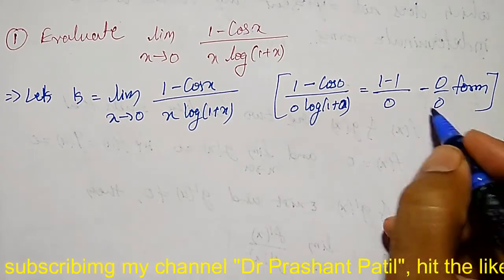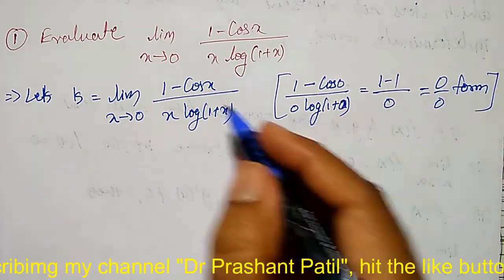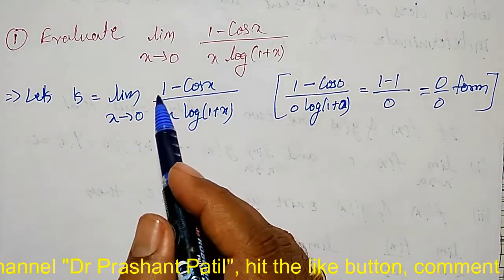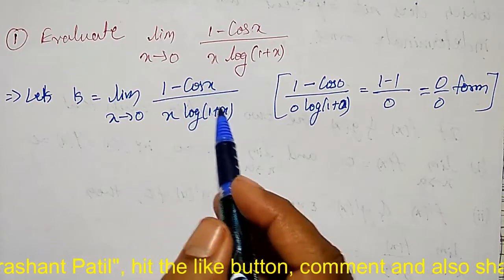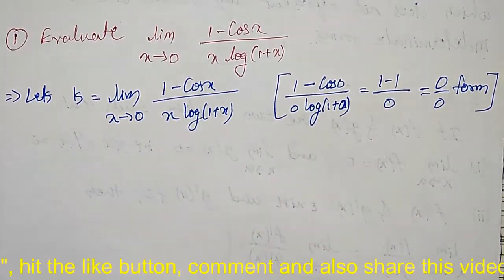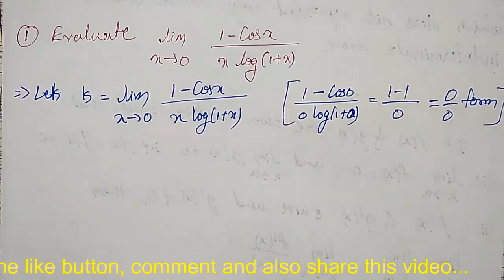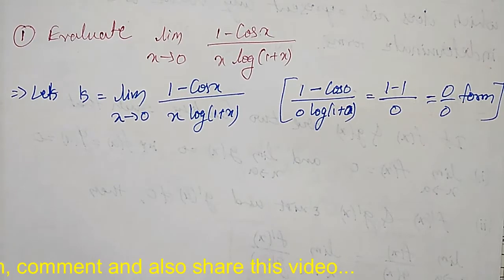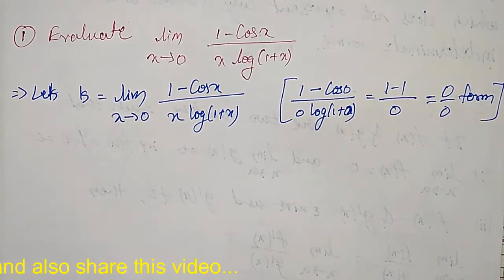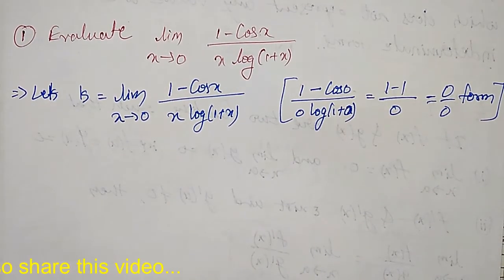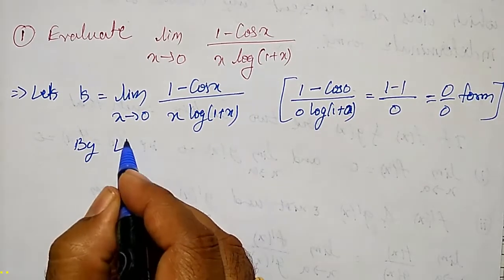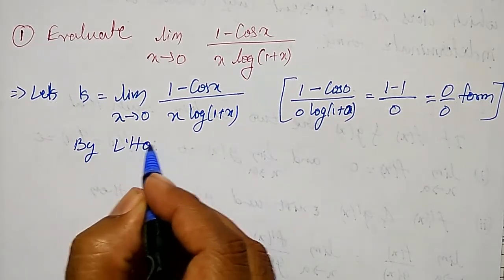It is in the 0 by 0 form: 1 minus cos x is f(x) and x·log(1+x) is g(x). When I substitute I get 0 by 0. Since it is in the 0 by 0 form, I can apply L'Hôpital's rule.